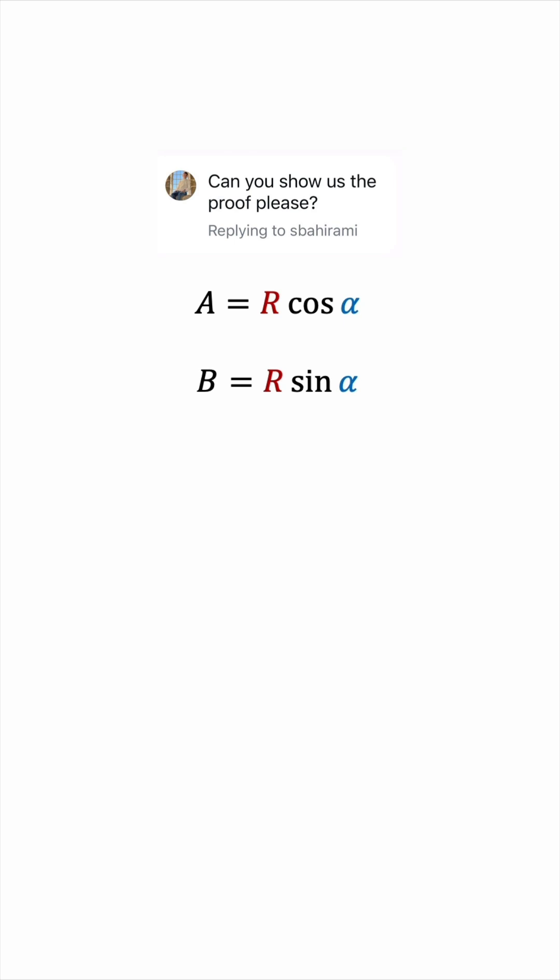So to find R, let's square the two equations. And then we can add the two equations together and factor out the R squared on the right-hand side. Notice that we have a cosine squared plus sine squared with the same input, so this must be equal to 1. So we have R squared equals A squared plus B squared. And taking the positive square root, we get R equals the square root of A squared plus B squared.